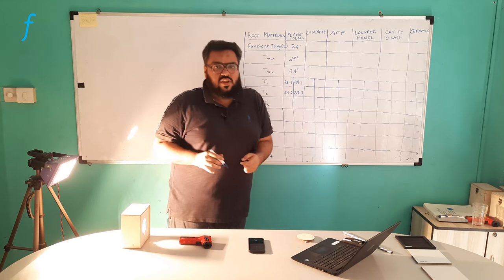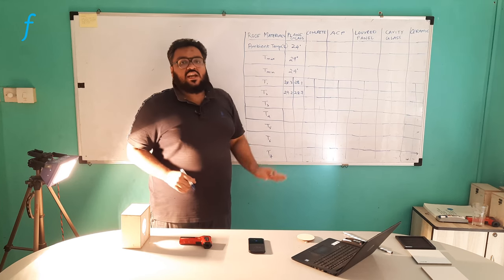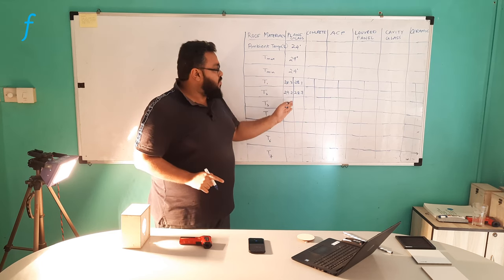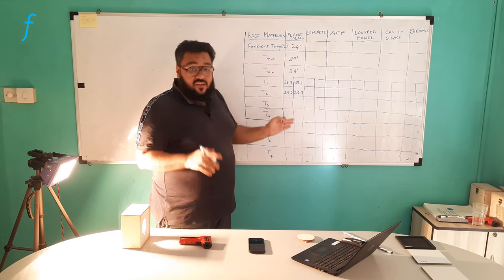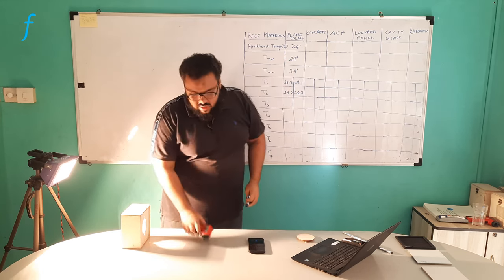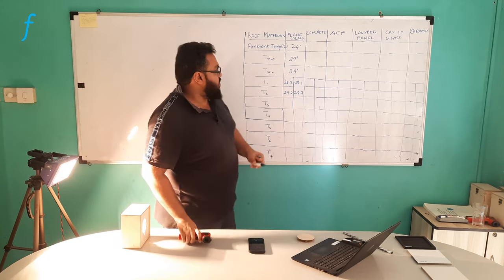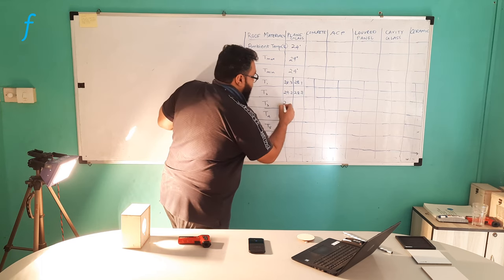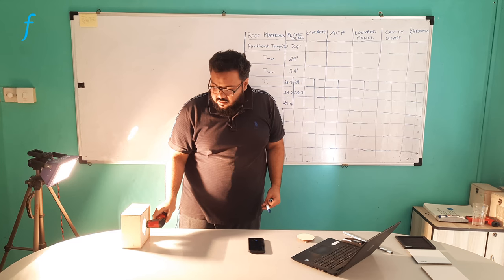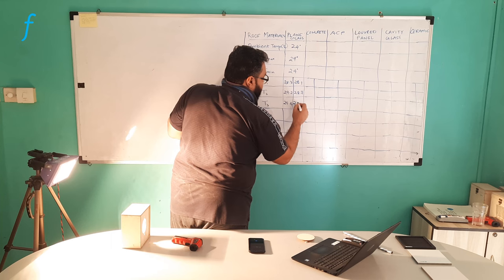The difference between the earlier experiments and this one is that I don't know in advance how many readings I have to take. What I know is I will not stop taking readings until I get the target temperature. Another 30 seconds have passed. This reading is 29.4 outside and the inside reading is 28.8.